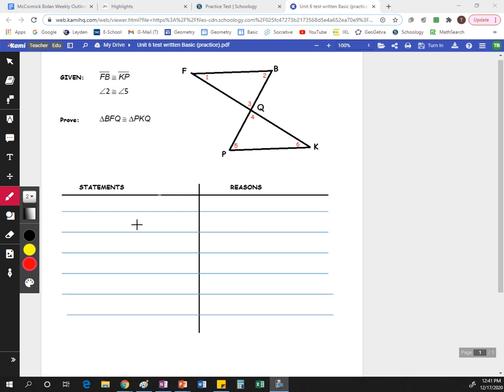First off, when you have a proof like this where you have to fill in everything by yourself, step one should be find the given information. Here it says segment FB is congruent to segment KP. And you want to mark that in your picture. That's this top segment is congruent to this bottom segment. And then once you've marked it in your picture, that becomes a line in your proof.